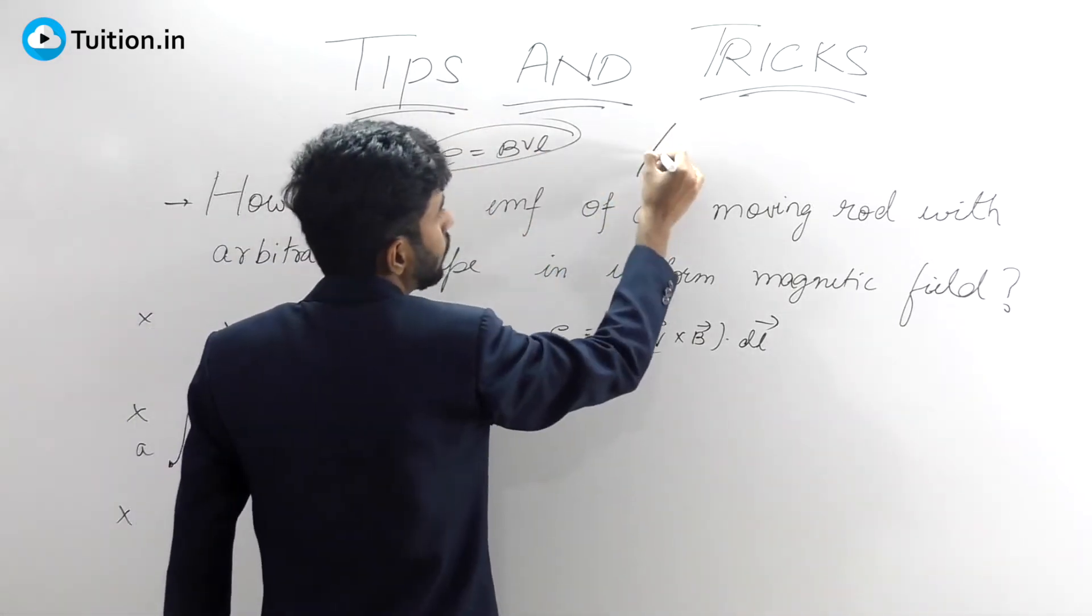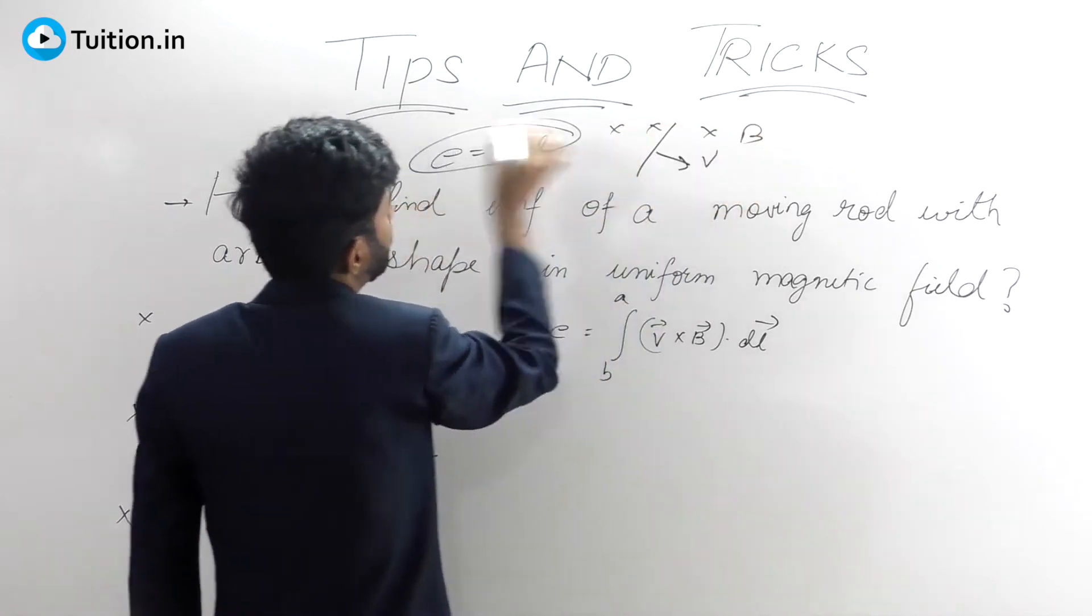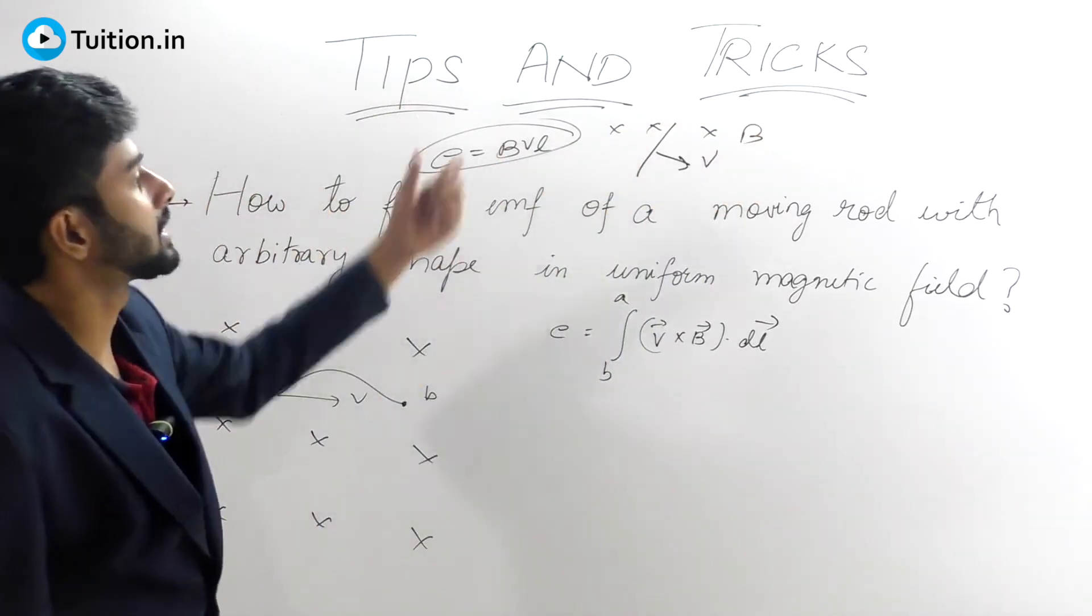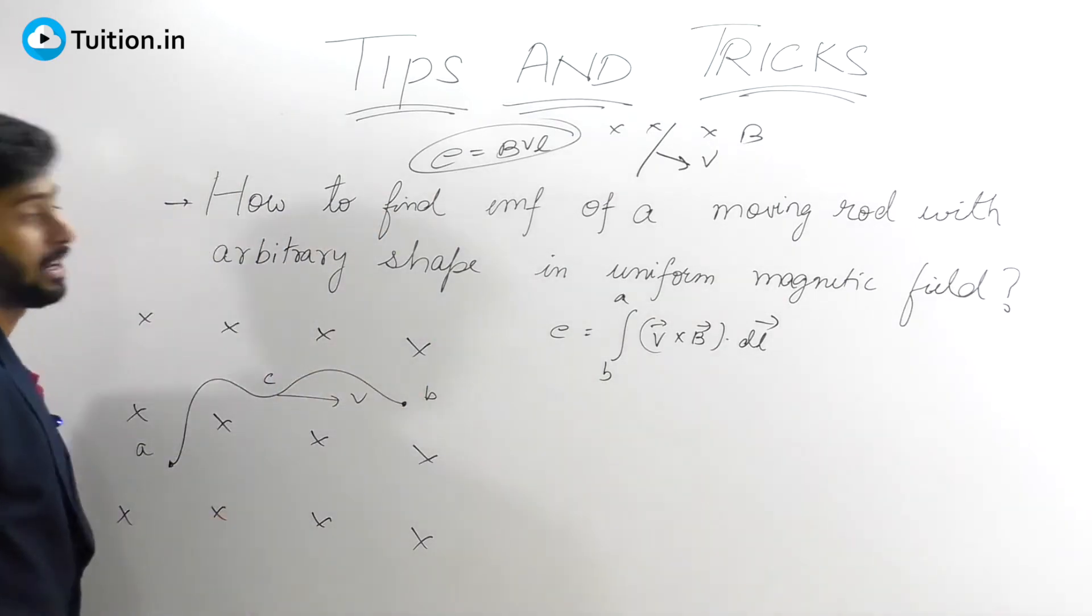So if you have a rod like this moving with some velocity v in a uniform magnetic field B, then the magnetic EMF is given by the formula BVL. But if you have a rod of some arbitrary shape, then how do you do it?